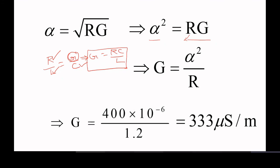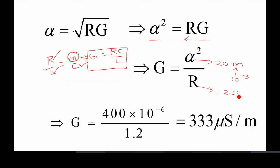G is equal to alpha square by R. Alpha is given as 20 milli — milli means 10 to the power of minus 3. If you square it: 20 squared is 400, and 10 to the power of minus 3 squared is 10 to the power of minus 6. R is 1.2 ohms per meter. Substituting, we get conductance G as 333 microsiemens per meter.